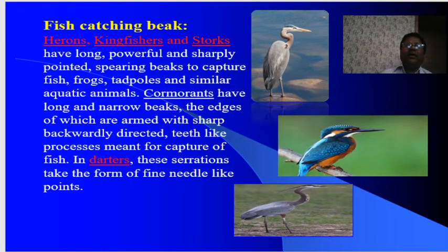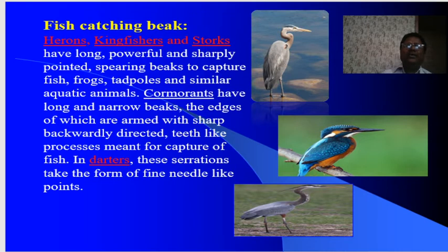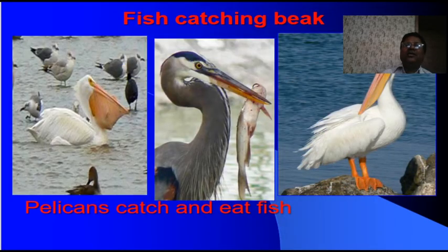Fish-catching beak — herons, kingfisher and storks are examples of this type. These birds have a long, powerful and sharply pointed spearing beak to capture fish, frogs, tadpoles and other aquatic animals. Cormorants have a long and narrow beak, the edges of which are armed with sharp, backwardly directed tooth-like processes meant for capture of fish. In terns, these serrations take the form of fine needle-like points. Examples of fish-catching beaks also include the pelican.